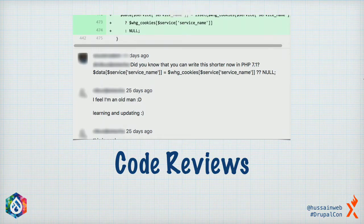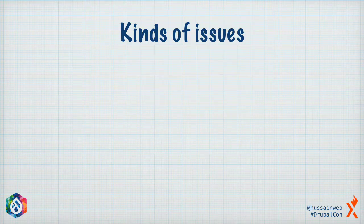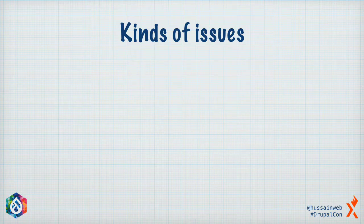We shouldn't be doing this manually at all — we should let the computer do this. Before we start talking about various tools and how to actually do this with a computer, let's broadly classify the various kinds of issues that we usually see in code.